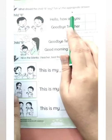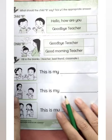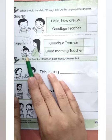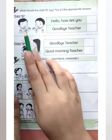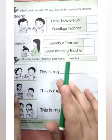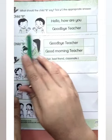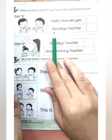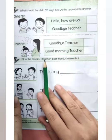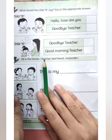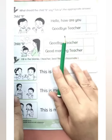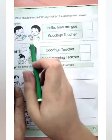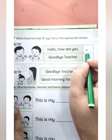Pick the appropriate answer. Look at Child B. The first word choice is 'Hello, how are you?' and the second is 'Goodbye, teacher.' Which one does Child B say? This is a teacher — so of course not 'goodbye teacher.' You have to tick 'Hello, how are you.' Child B says 'hello, how are you,' so you tick that one.